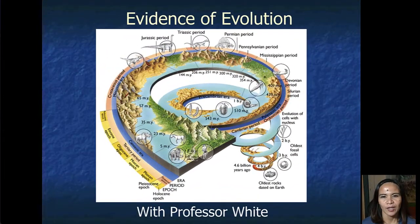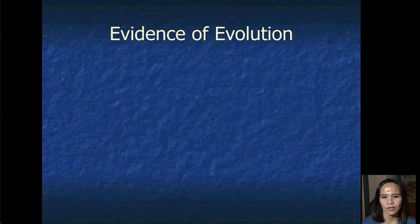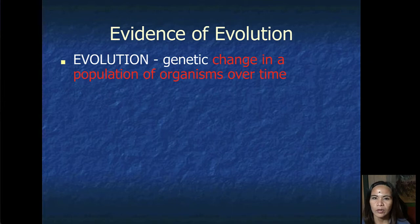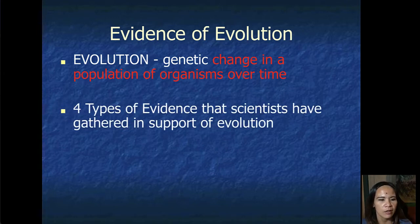Hello, this is Professor White, and I'll be discussing evidence of evolution. Evolution, as we know, is a change in the population of organisms over time, genetic change to be specific. There are four types of evidence that scientists have gathered in support of evolution.